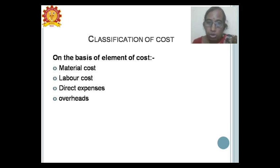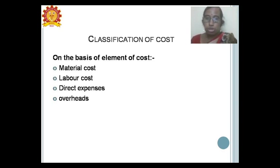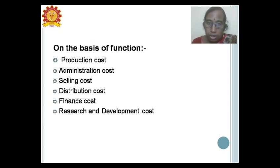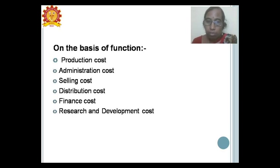The first classification of cost is on the basis of elements: material cost (raw material, work-in-process, and finished goods cost), labor cost, direct expenses (factory and other related direct expenses), and overheads. On the basis of functional service, we have production cost, administration cost, selling cost, distribution cost, financial cost, and research and development cost.